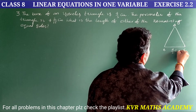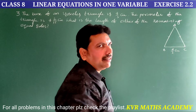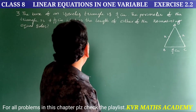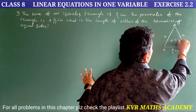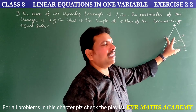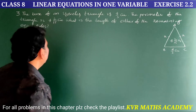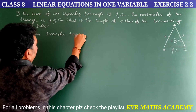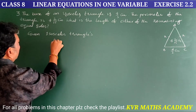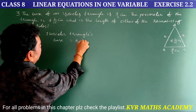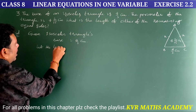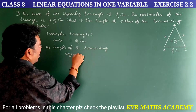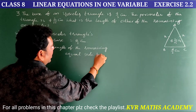The base is given as 4/3 cm. We have to find the length of the two equal sides. Suppose each equal side is x centimeters. The perimeter is also given as 62/15 centimeters. So x represents the length of each equal side.